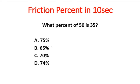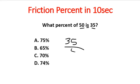Let's check what percent of 50 is 35. First of all, we have to divide 35 by 50, and then we multiply by 100.